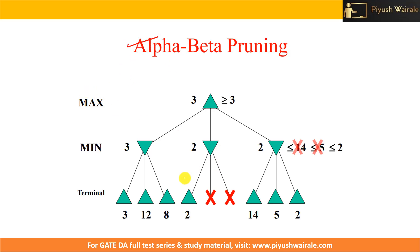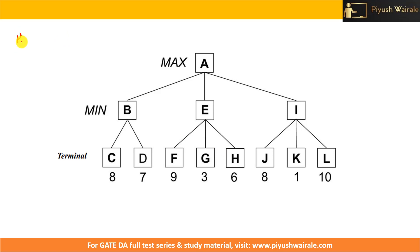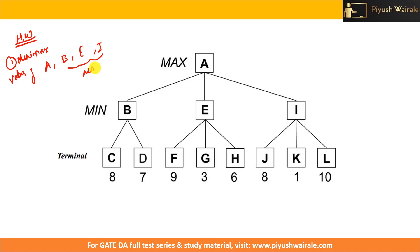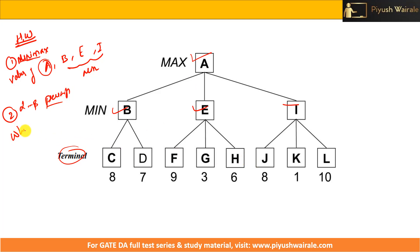As homework, try to apply minimax algorithm to the given example tree. Find the value of nodes A, B, E, and I. Node A is a max decision point, and B, E, I are min nodes. Find the maximum value of A, minimum values of B, E, and I from the terminal values. Then apply alpha beta pruning to the same tree and tell me which nodes or paths can be pruned. Comment below with your answers.